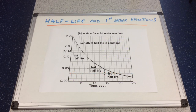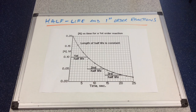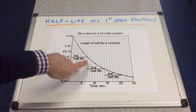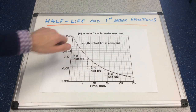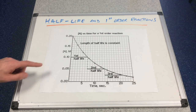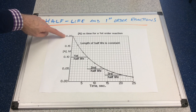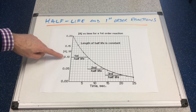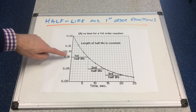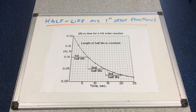So if we bring order of reaction in now, you can see I've got a graph here — a concentration-time graph for a first-order reaction. We get this classic curve that we've seen quite a lot in the rates topic. You can see that the half-life has been measured on the graph. We're starting in this case at 0.2 moles per decimetre cubed, so the time it takes to go to half of that, which would be 0.1, is the first half-life.